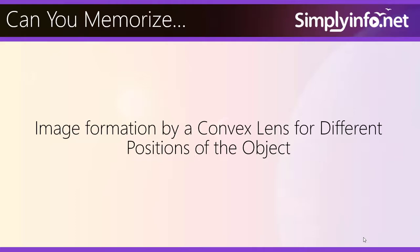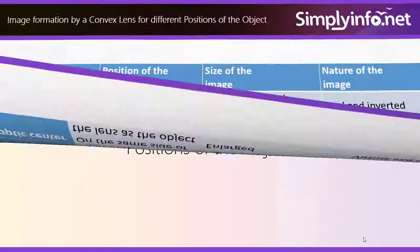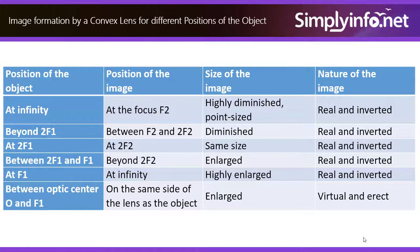Can you memorize image formation by a convex lens for different positions of the object? At infinity, the position is F2, highly diminished, point sized, real and inverted.